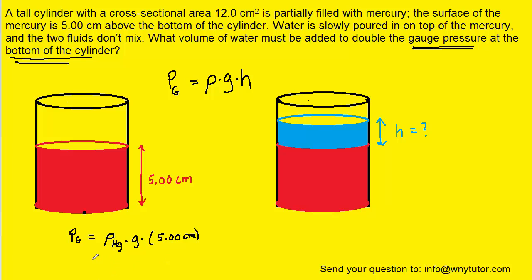The density of mercury can be looked up in the textbook's table of densities. Mercury's density is 13.6 × 10³ kilograms per meter cubed. We multiply that by gravity, which is 9.8 meters per second squared.